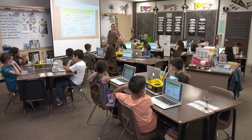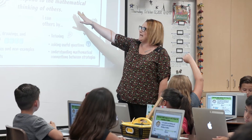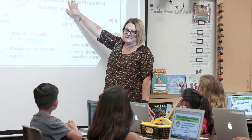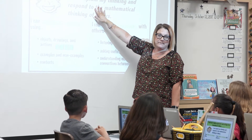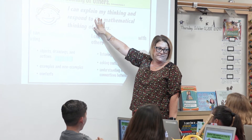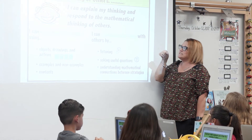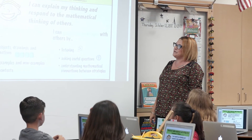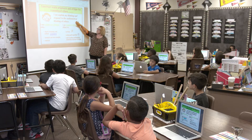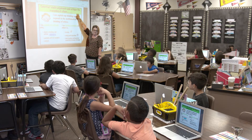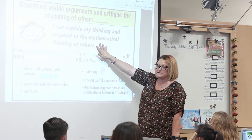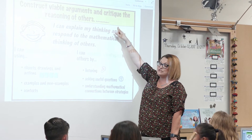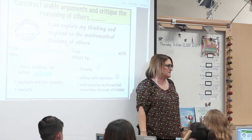So let's kind of break that down a little bit. I can explain my thinking — if I am constructing a viable argument, that's what I'm doing. I am explaining my thinking to others. And respond to the mathematical thinking of others — that's the same as critiquing the reasoning of others. If I'm going to respond to someone else's mathematical thinking, I'm going to critique them or give them some feedback.